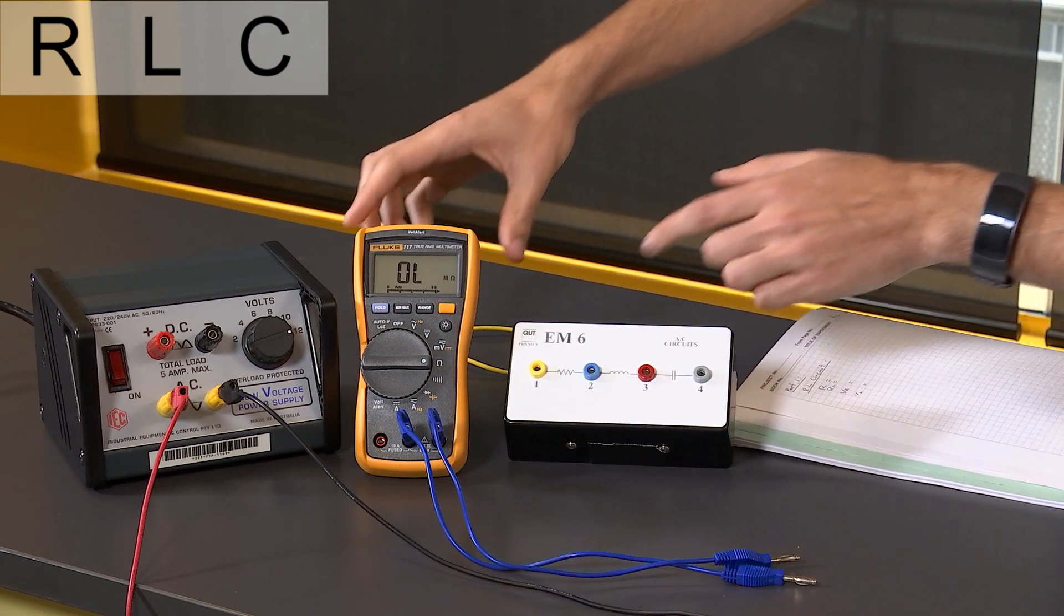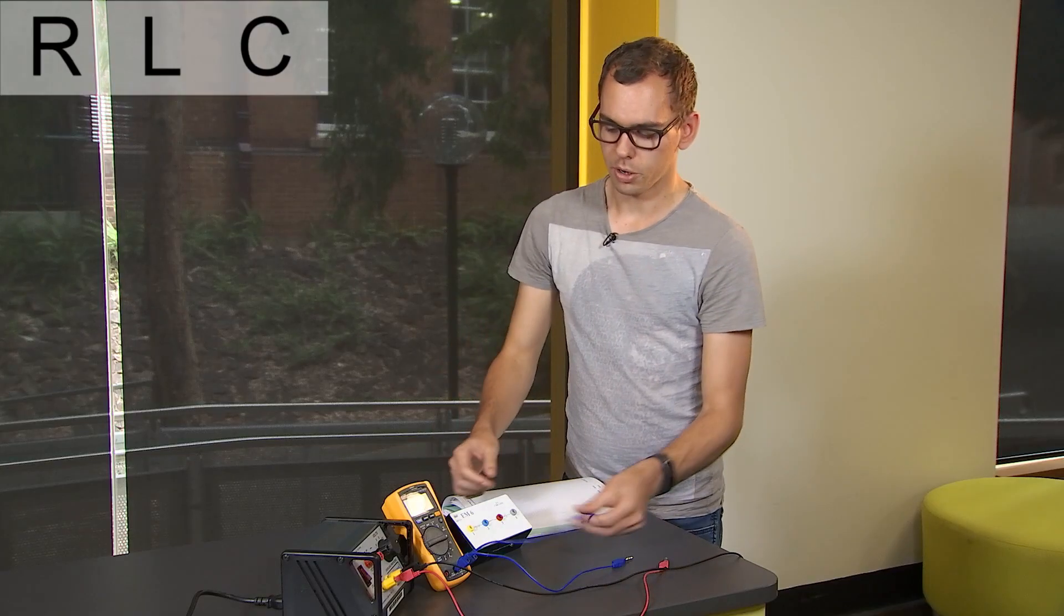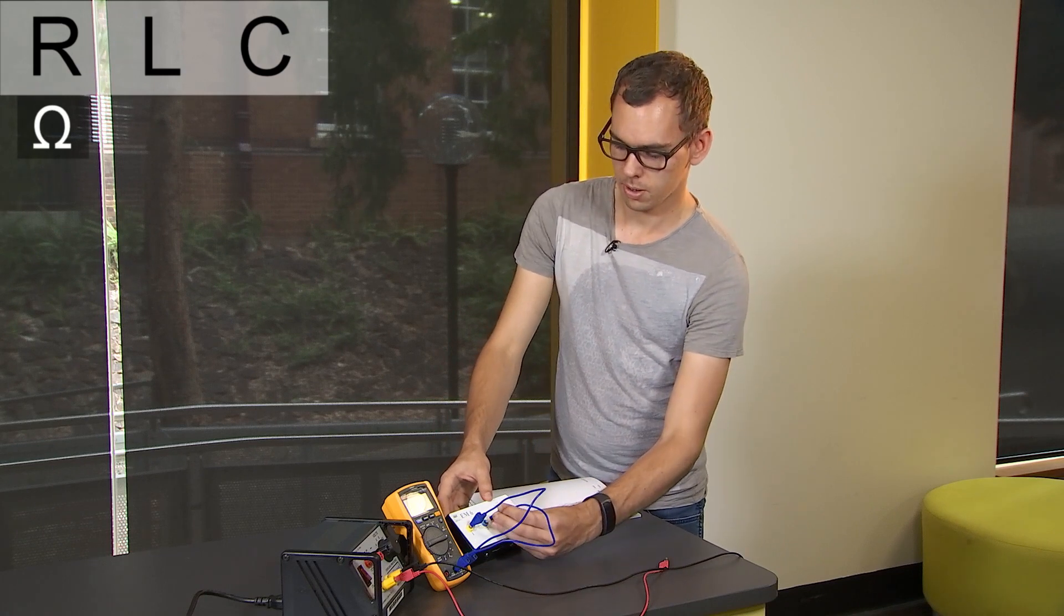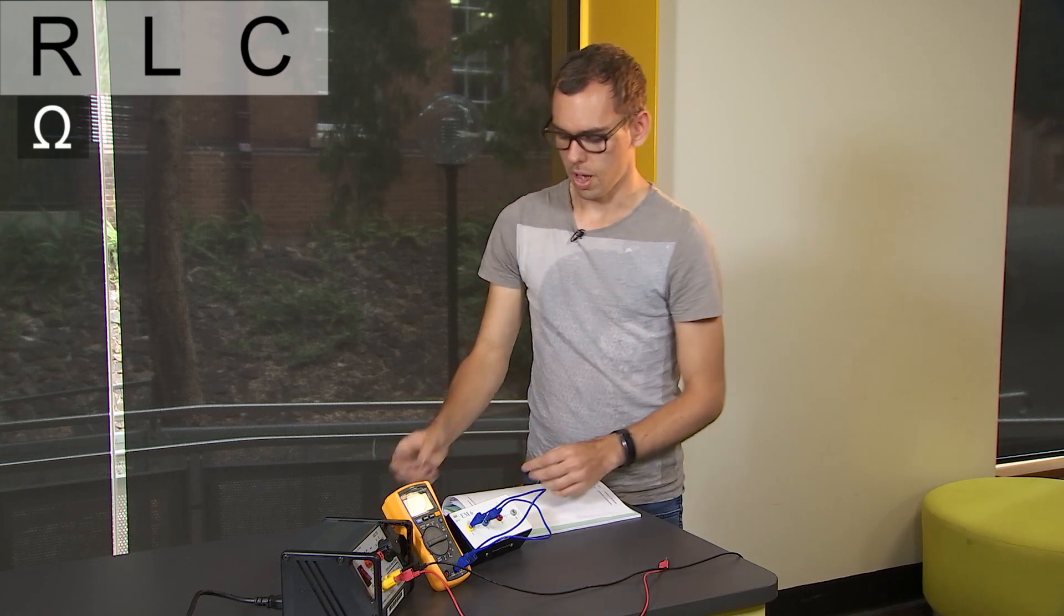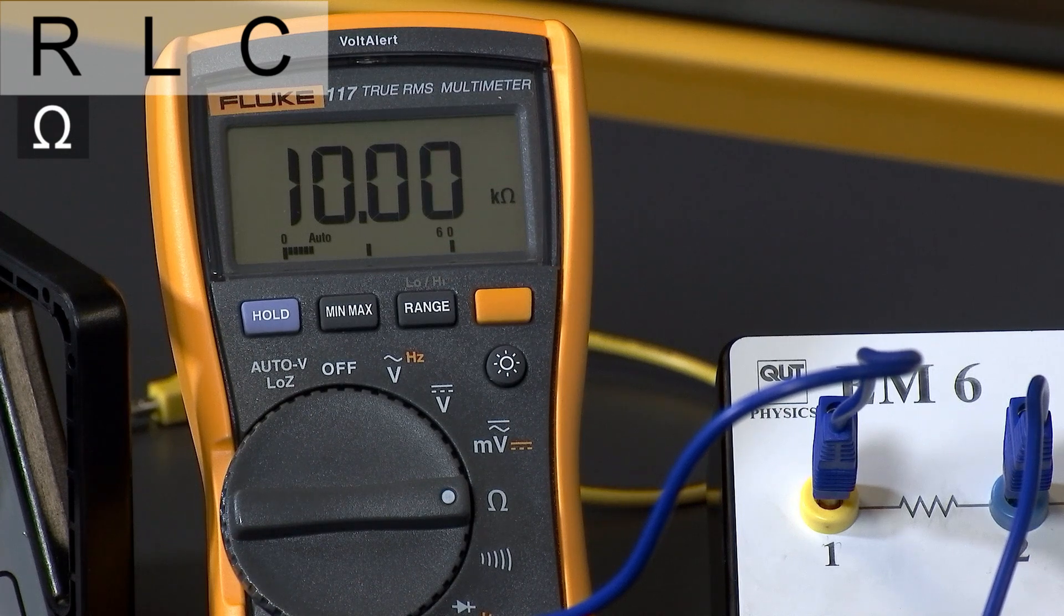I've set my multimeter into resistance mode and firstly I'm going to measure the resistance of the resistor and record this in my lab book: 10 kilo ohms plus or minus 0.01 kilo ohms.